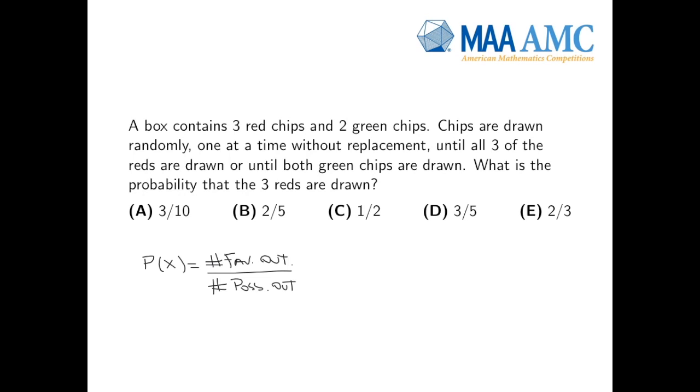So for example, the probability of getting heads when tossing a coin is one half, because there's only one side that has heads, but there's two possible sides.